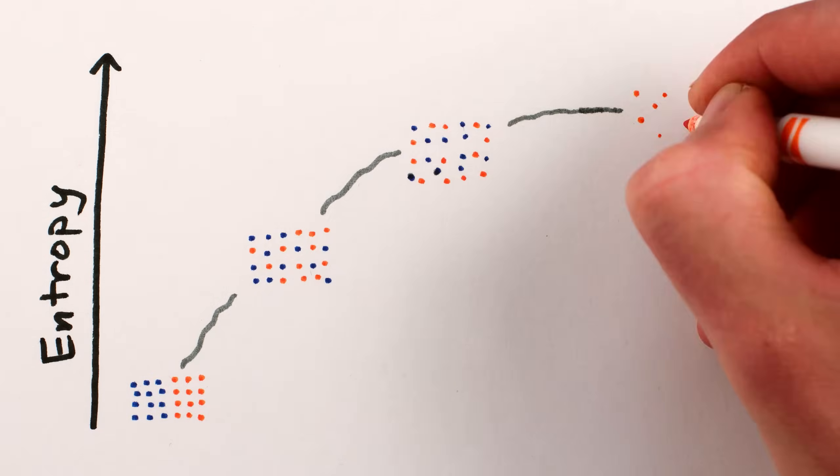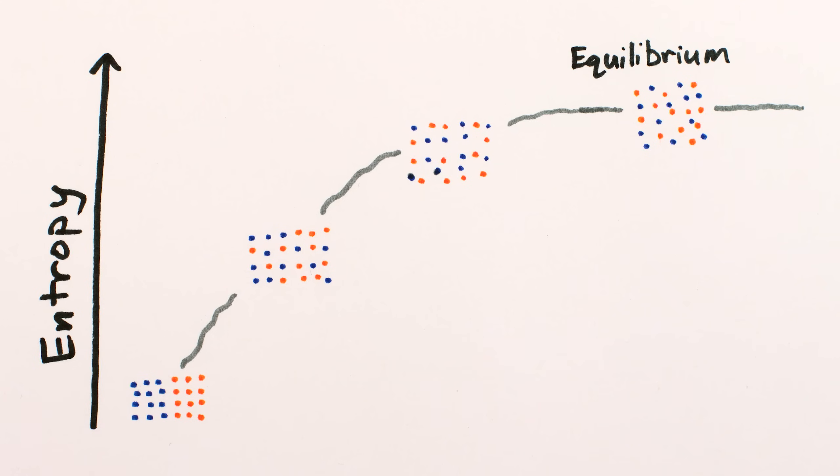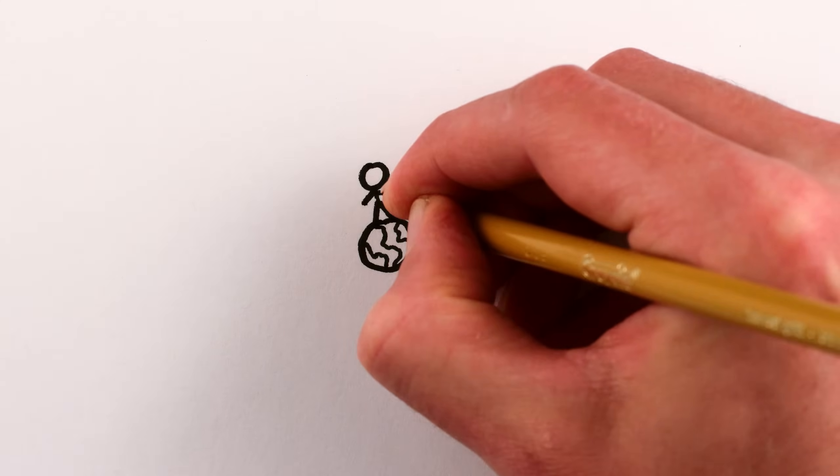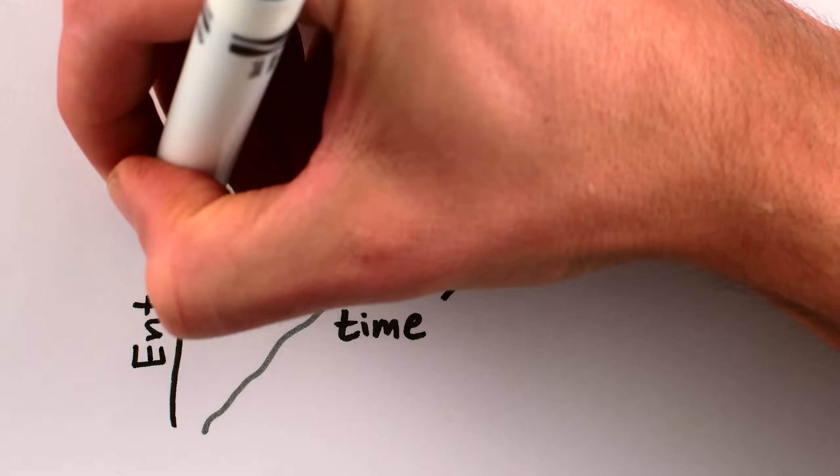Once a system gets to its fully disordered state, its equilibrium, there's no more direction of increasing entropy to determine the arrow of time. So the fact that we experience the flow of time right now means that we're not in equilibrium.